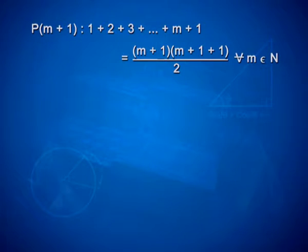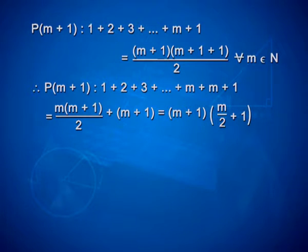To prove p of m plus 1 to be true, we will have to prove that 1 plus 2 plus 3 plus ... plus m plus 1 is equal to m plus 1 into m plus 1 plus 1 upon 2, for every m belonging to N. Using the first equation, p of m plus 1 can be written as 1 plus 2 plus 3 plus ... plus m, plus m plus 1.